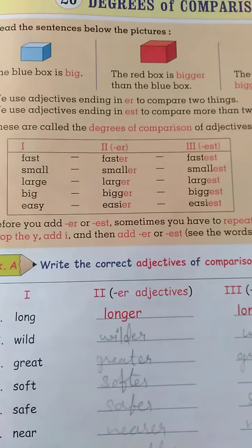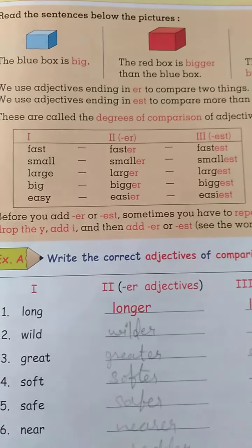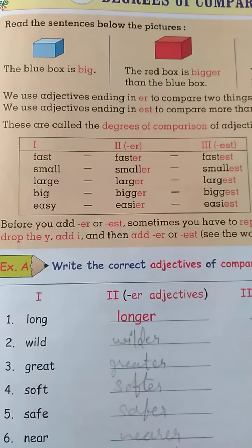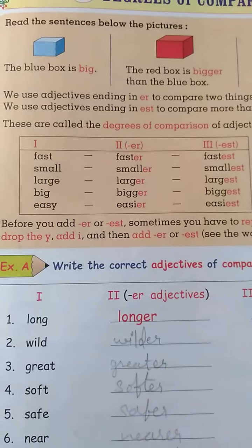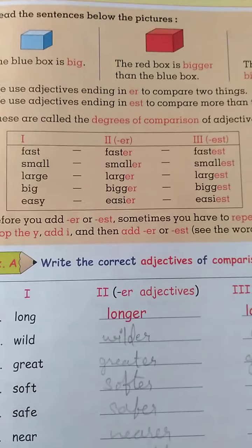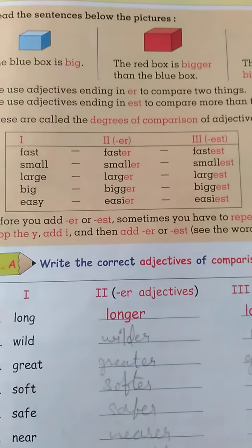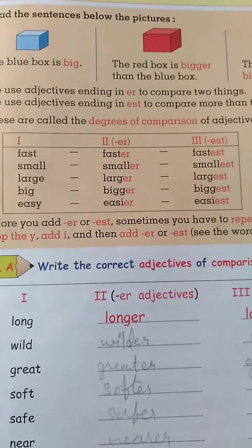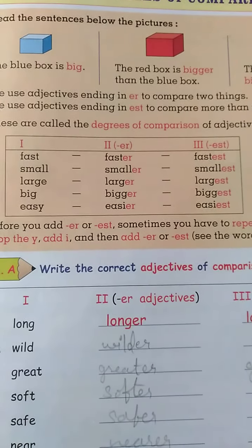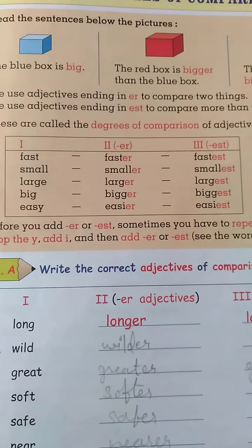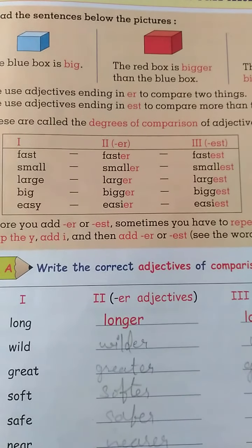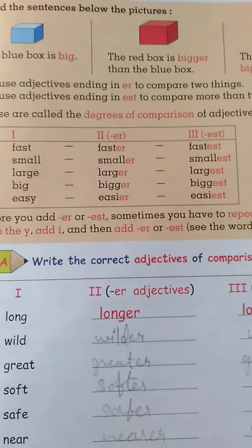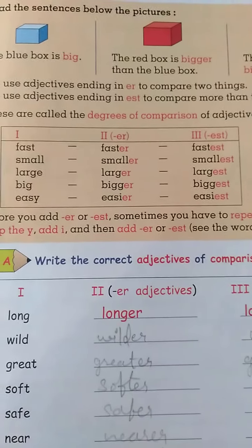Easy, easier, easiest. The spelling of easy is E-A-S-Y. But in the comparative form, we remove the Y. And instead of Y, we use I-E-R. Easier and easiest.